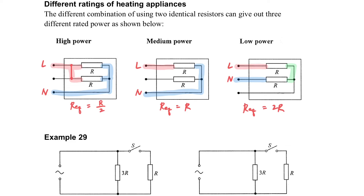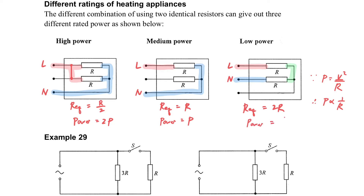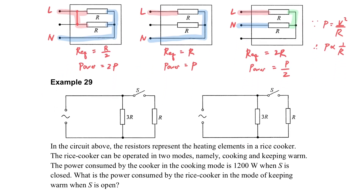If you remember, P equals V squared over R. Because the voltage is the same at its rated value, for the connection with lower resistance, it will have higher power. So the parallel connection has the highest power, the middle one has medium power, and the series connection has the lowest power, because power is inversely proportional to resistance.